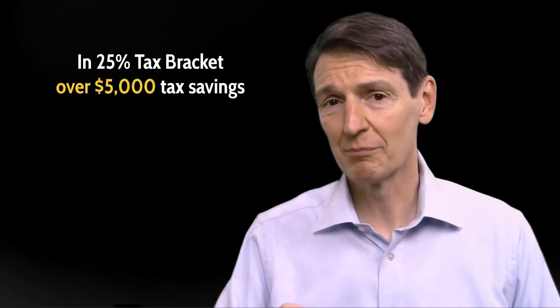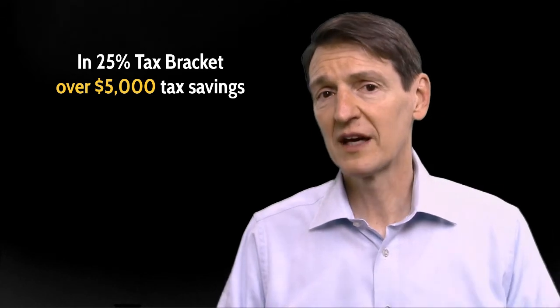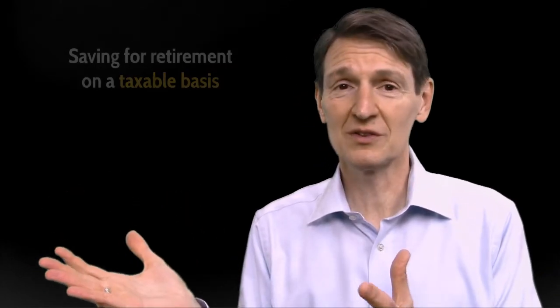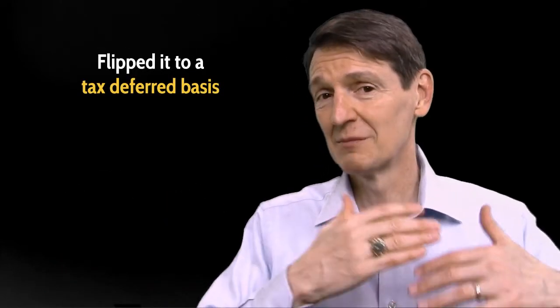In his 25% bracket, that's over $5,000 of tax saving, so he more than takes care of this liability. He happened to have $40,000 he was saving up for retirement on a taxable basis, so we just flip the money over and make it on a tax-deferred basis. It's huge, really big.